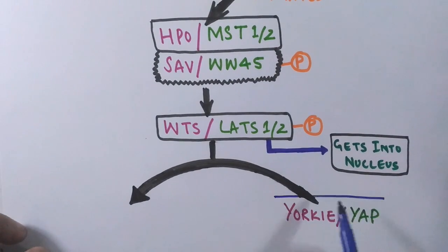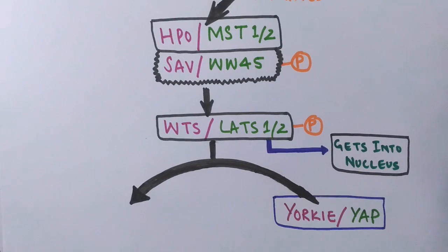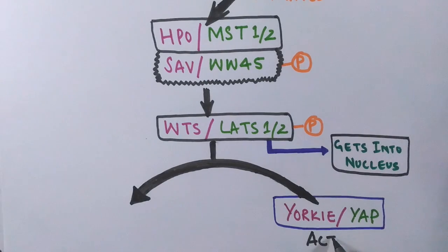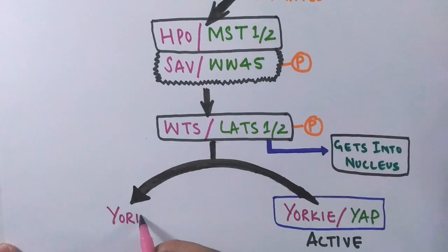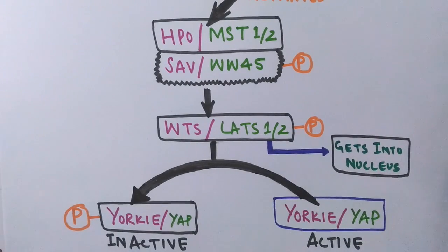After it gets into the nucleus, it deactivates some transcriptional units - Yorkie protein kinase and YAP protein kinase, Yorkie in case of Drosophila, YAP in case of mammals. This active component is present in the nucleus that drives transcription of certain genes, but when it receives WTS or LATS it gets phosphorylated, which is the inactive form of Yorkie or YAP protein kinase.